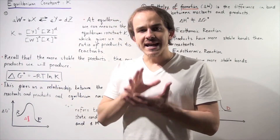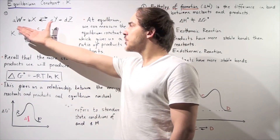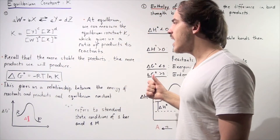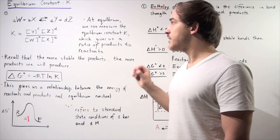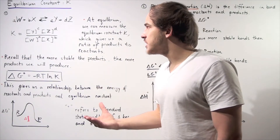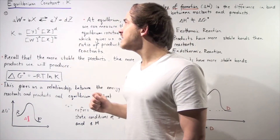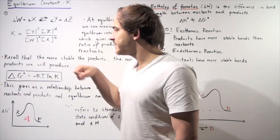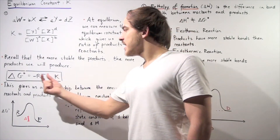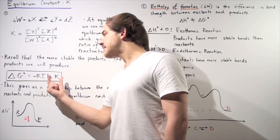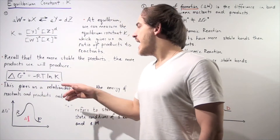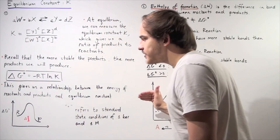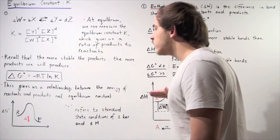What exactly is the relationship between the energy of the starting materials and products and our equilibrium constant? The relationship is given by the following formula: the change in Gibbs free energy under standard conditions, ΔG°, is equal to negative R times T times the natural log of K, where R is the gas constant, T is temperature in Kelvin, and K is our equilibrium constant. This gives us a relationship between the energy of reactants and products and the equilibrium constant.